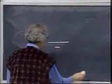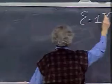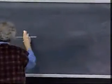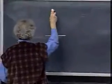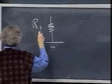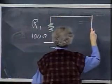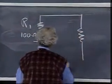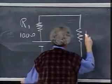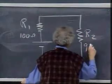I have here a battery, and the battery has an EMF of one volt. Here is a resistor R1, which is hundred ohms. And here is a resistor R2, which is nine hundred ohms.